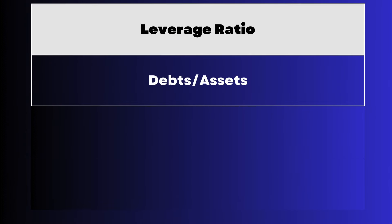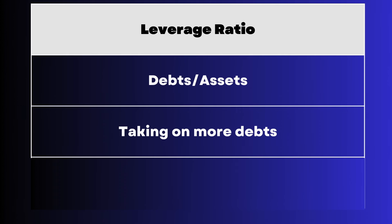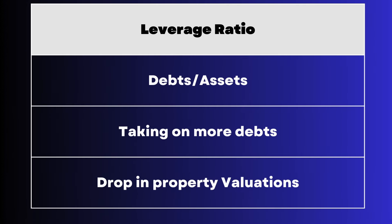So what is the leverage ratio? The leverage ratio is essentially the ratio of assets divided by debts. There are a few ways the ratio can get affected. First, REITs simply take on more debts, which increases the amount of debts and therefore brings up the leverage ratio. Second, during a high interest rate environment, property valuations tend to drop. When property valuations drop, the REIT's asset prices drop, therefore causing the ratio to go up. So usually in a high interest rate environment, REITs must be more cautious when taking on debts for their properties.